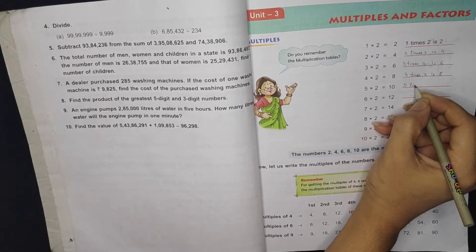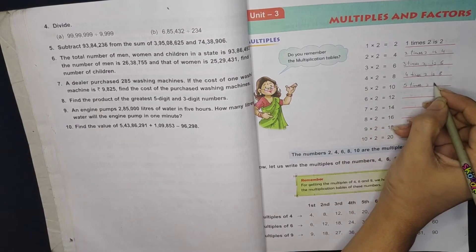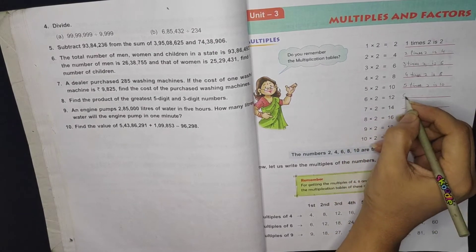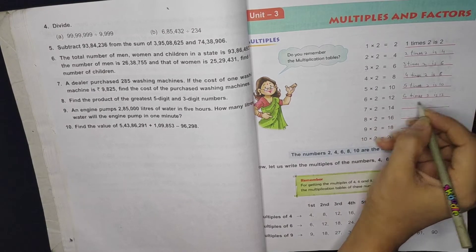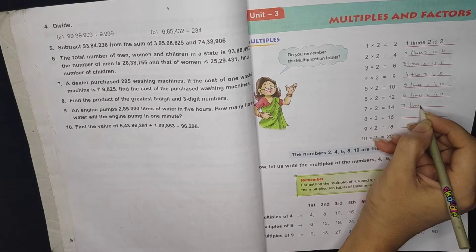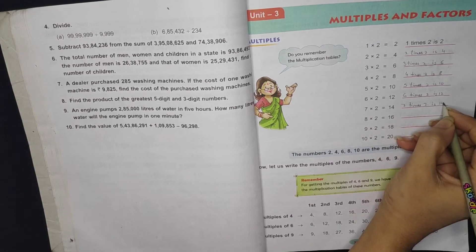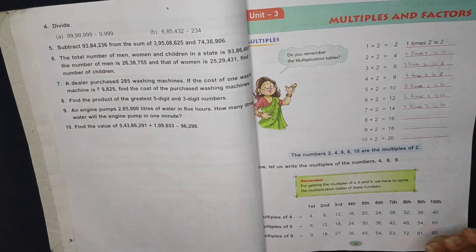And then 5 times 2 is 10. Then 6 times 2 is 12. Then 7 times 2 is 14. This way we will fill it in continuity.